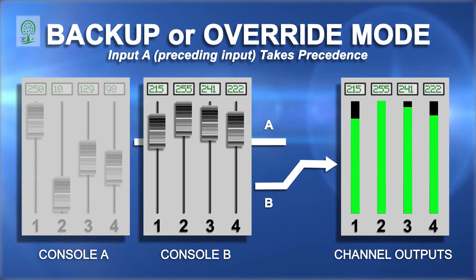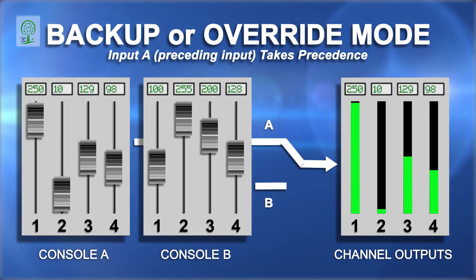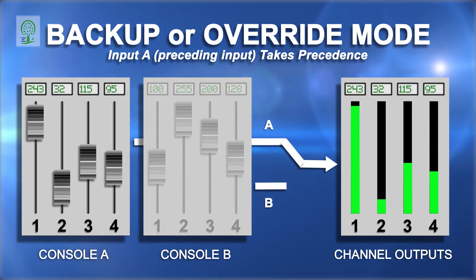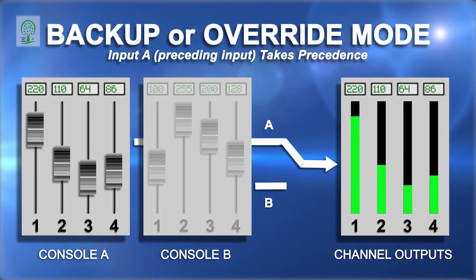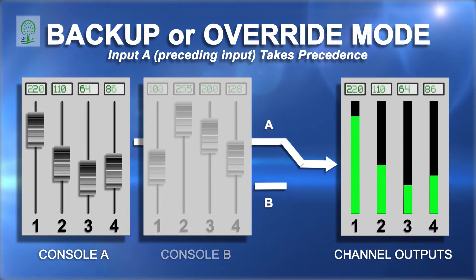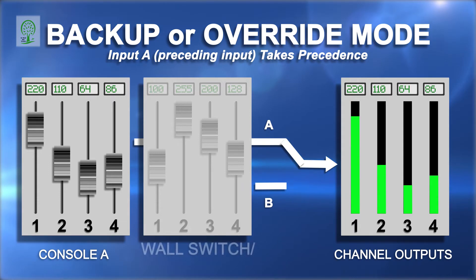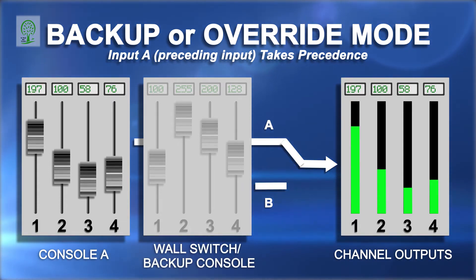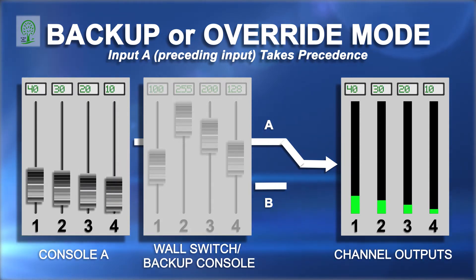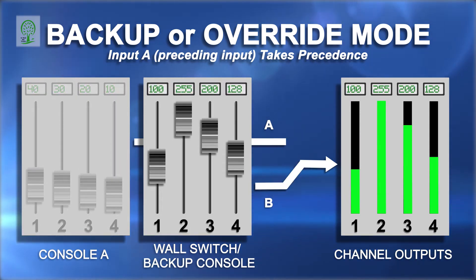If input A is restored, then the merger will immediately switch back to input A. This mode is useful for several scenarios, including having a DMX wall switch controller or backup lighting board connected to input B. If input A is turned off or disconnected, then input B is then active.